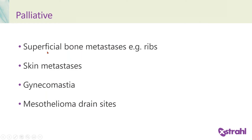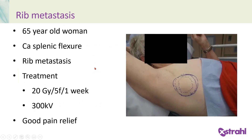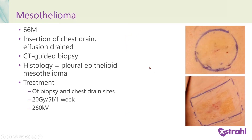Coming on to palliative indications — kilovoltage photons are a very easy treatment for superficial bone metastases, particularly for ribs, skin metastases, gynecomastia after hormone treatment for prostate cancer, and mesothelioma at drain sites. A 65-year-old lady with carcinoma of the splenic flexure and a painful rib metastasis was treated with 20 Gy in five fractions over one week using 300 kV photons, giving good pain relief. A 66-year-old man with mesothelioma, who had a chest drain inserted and a CT-guided biopsy, was treated at both the biopsy and chest drain sites with 20 Gy in five fractions using 260 kV photons to prevent local recurrence.